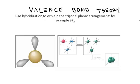Valence bond theory. Let's use the valence bond theory to explain the hybridization that must occur to result in the trigonal planar arrangement. Let's look at the example boron trifluoride in trying to understand this new type of hybridization.